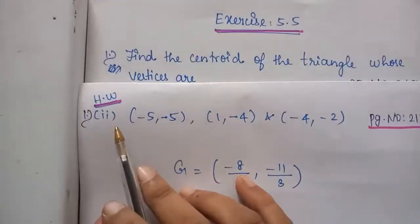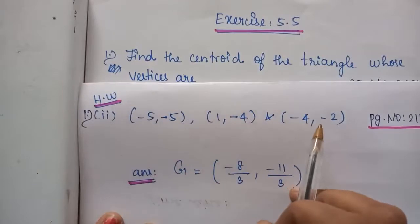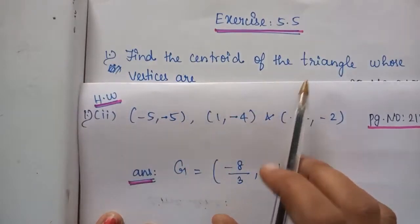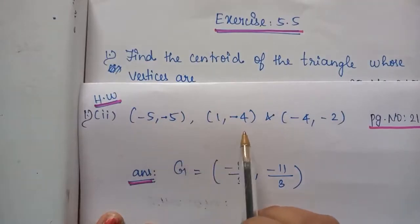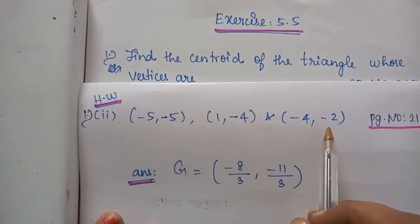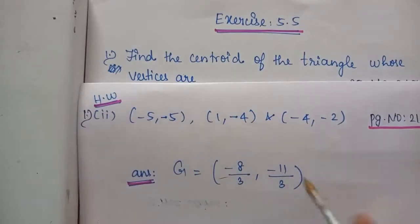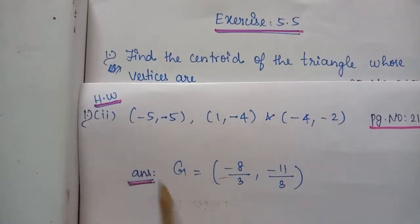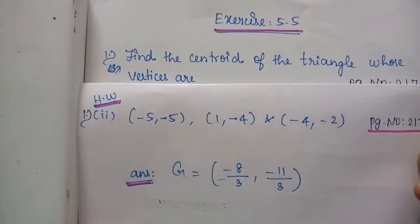The first problem's second subdivision is your homework problem. Three vertices are given: (-5,-5), (1,-4) and (-4,-2). You have to find the centroid of the triangle. The answer is centroid = (-8/3, -11/3). This belongs to page number 217.